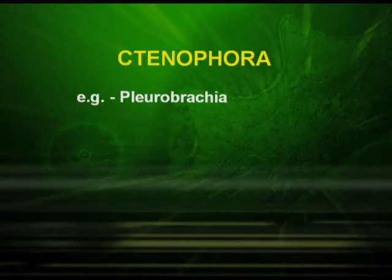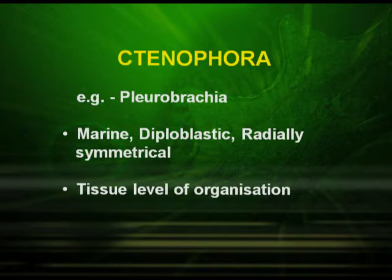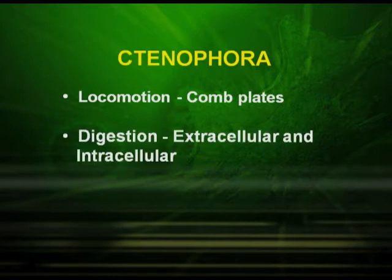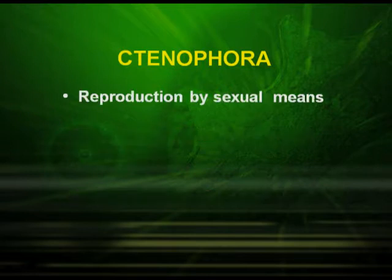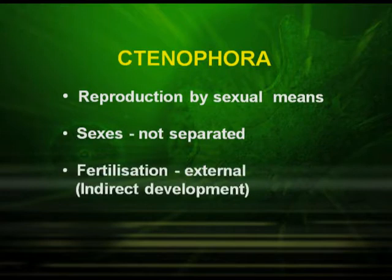Phylum Ctenophora — Pleurobrachia is included in this. They are marine, diploblastic animals with radial symmetry. They have tissue level of organization and locomotion is by comb plates. Digestion is extracellular as well as intracellular. They have the property of emitting light, and this particular property is known as bioluminescence. Reproduction is by sexual means, the sexes are not separated, and fertilization is external.